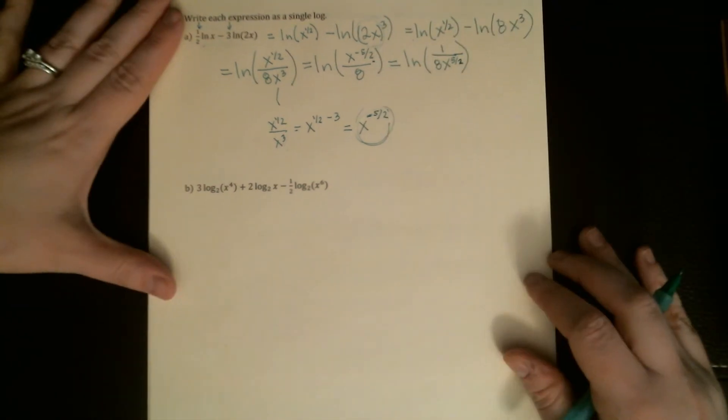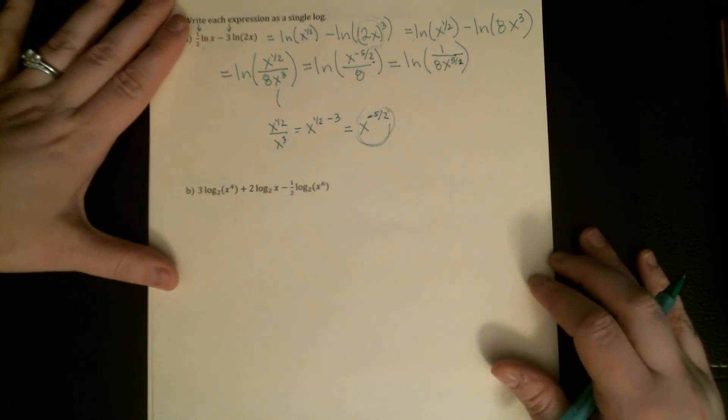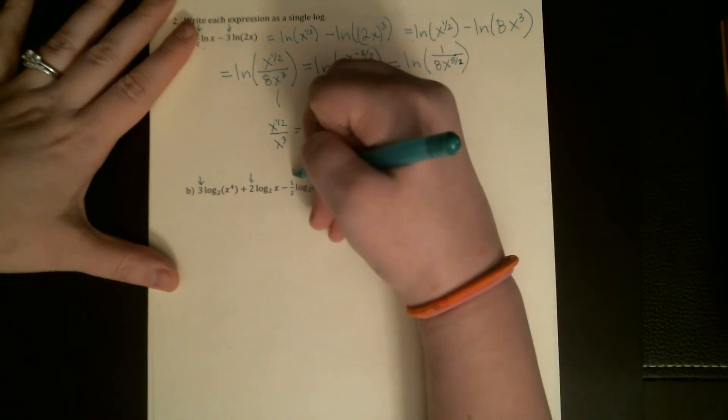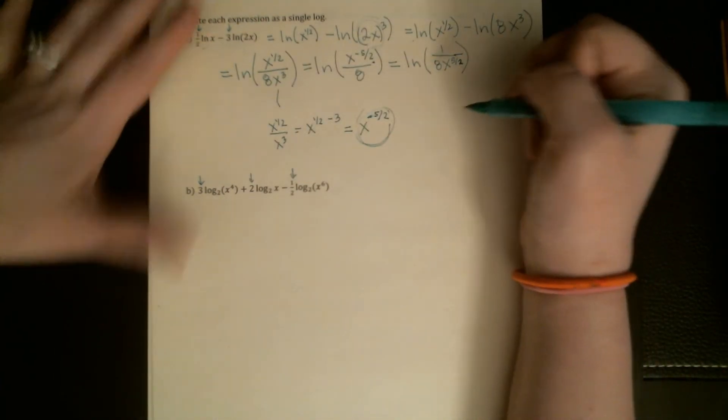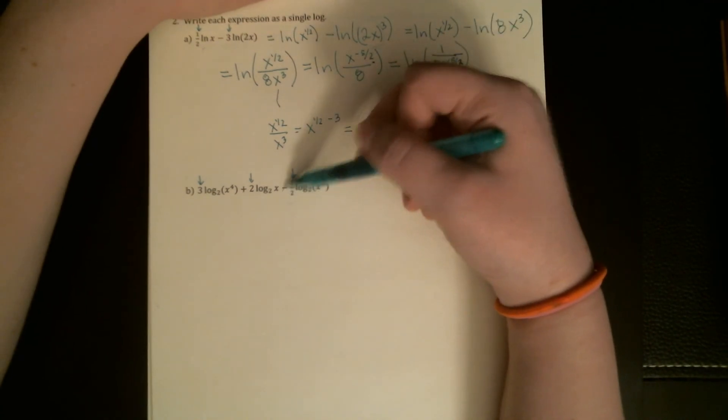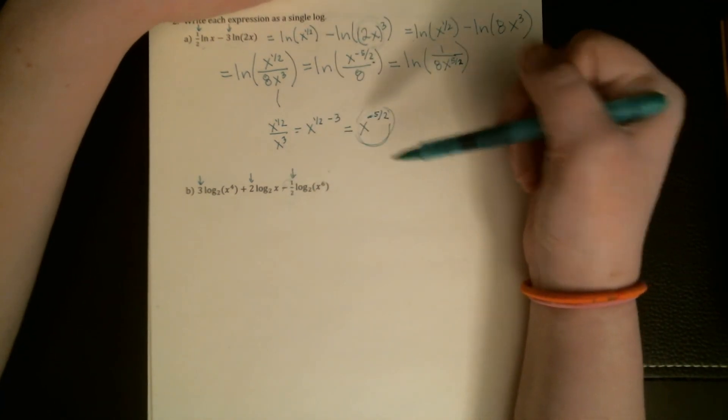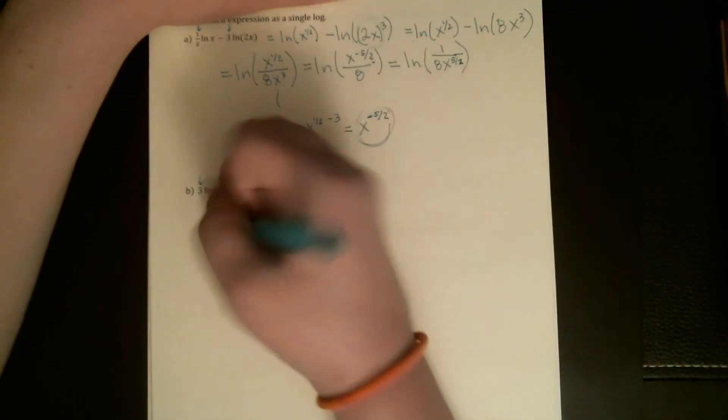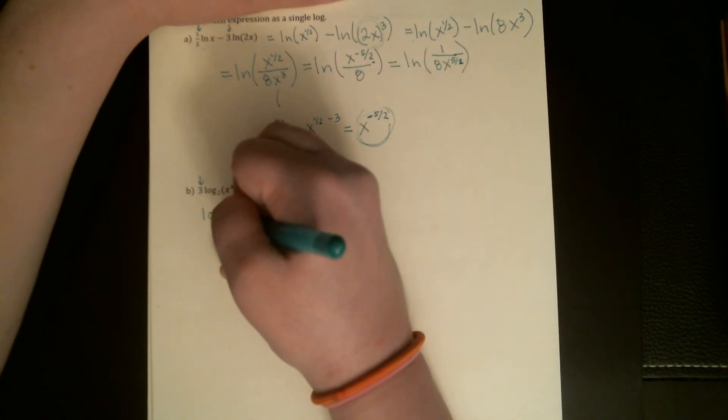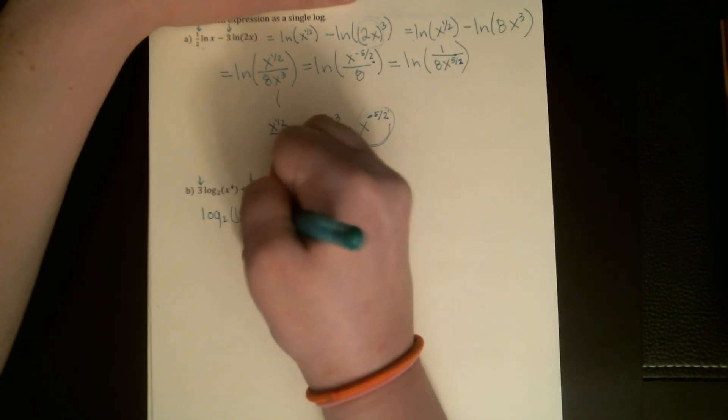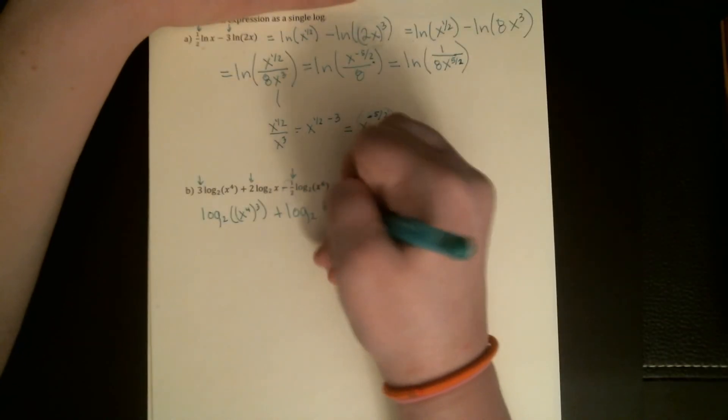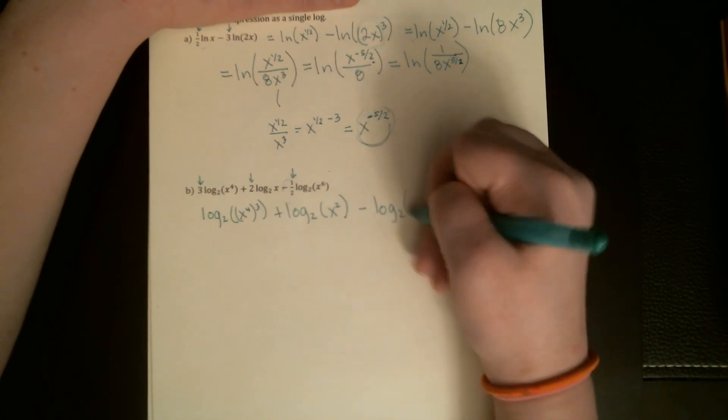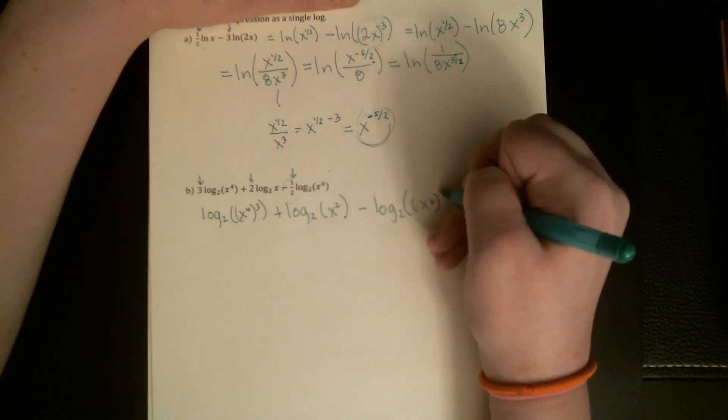Okay, so let's do one a little bit messier. This one has three terms. We want to start off the same way: we need to deal with this third, three and two and one-half out in front. I should actually point out that the negative sign could be moved up as well, you could think about that as a negative power. I'm going to just use the subtraction rule for logs, but that is an option. So I'm going to get the log base two of x to the fourth cubed plus the log base two of x squared minus the log base two of x to the sixth to the one-half.